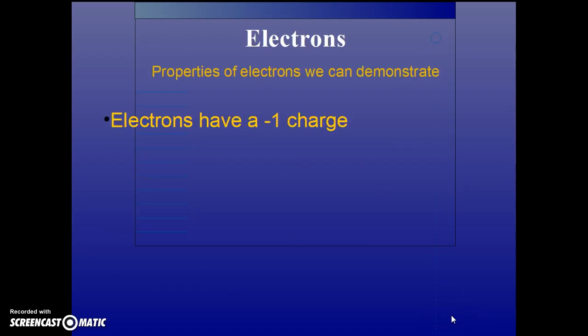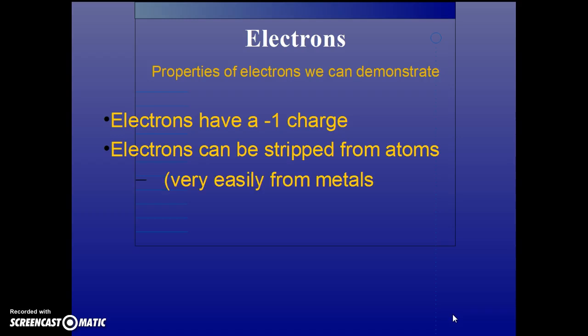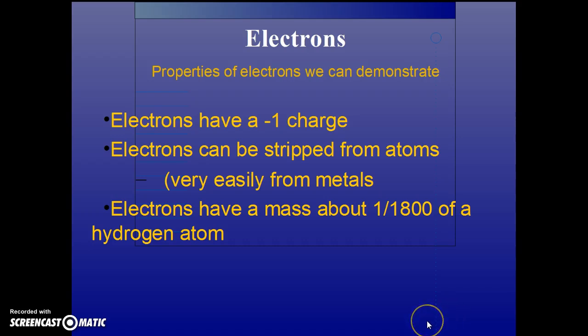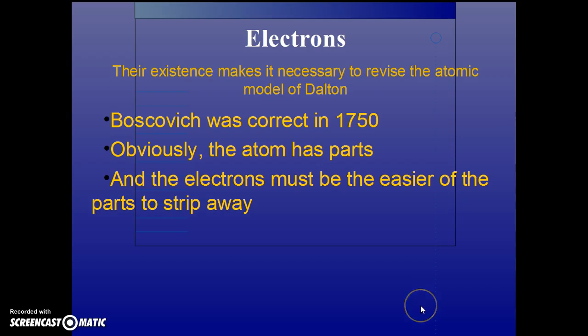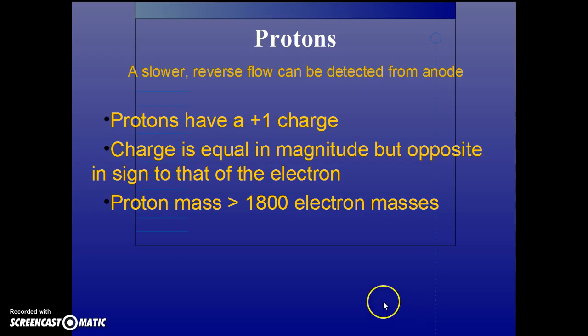Electrons have a negative one charge. They can be stripped from atoms just by shuffling across a carpet, and this is very easy to do to get the electrons away from metals. We proved in other experiments that electrons have a mass about 1/1800th of that of a hydrogen atom. So Boscovich was correct in 1750 - the atom does have parts. Very important, the electrons must be the easier of the parts to strip away from the atom. The electron can come away from the atom.